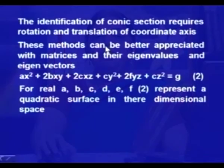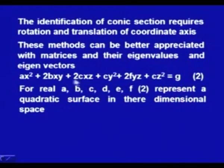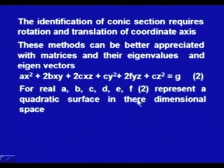These methods can be better appreciated with matrices and their eigenvalues and eigenvectors. What I have explained is the case of two dimensions. But if we have three or more dimensional quadratic forms, things will be difficult to visualize. With the help of matrices and eigenvalues and eigenvectors, one can very easily identify the quadratic forms. In general, a three-dimensional quadratic surface is ax² + 2bxy + 2cxz + dy² + 2fyz + gz² = h, a quadratic form in three dimensions for real coefficients.